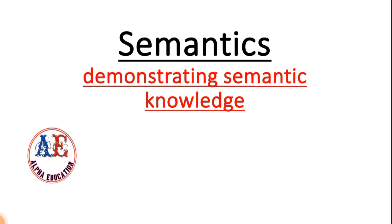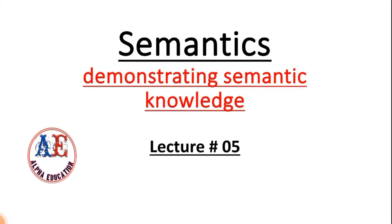We discussed the five aspects of speaker semantic knowledge in the previous lecture. There are ten aspects of semantic knowledge in total, but we discussed only five in the previous lecture because it was going to be very long, so I divided it into two parts. This is the second half, and in this lecture we will discuss the remaining five aspects of semantic knowledge.